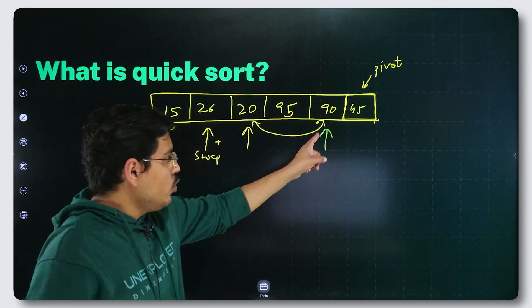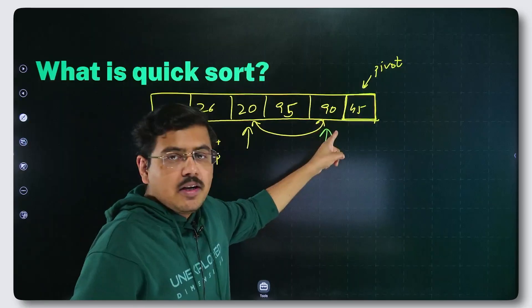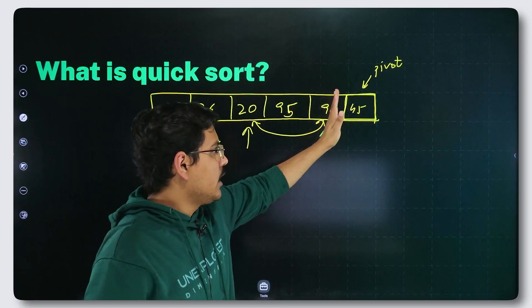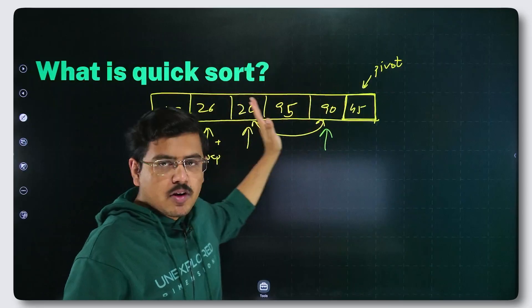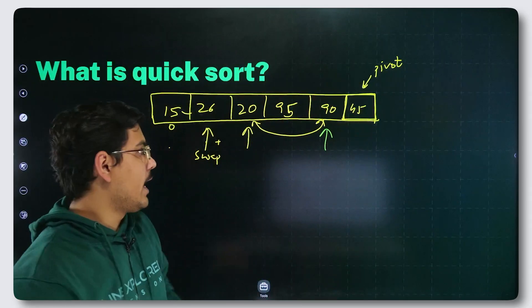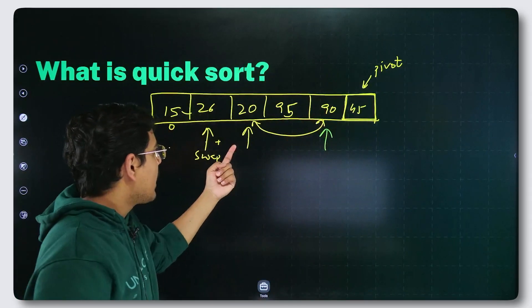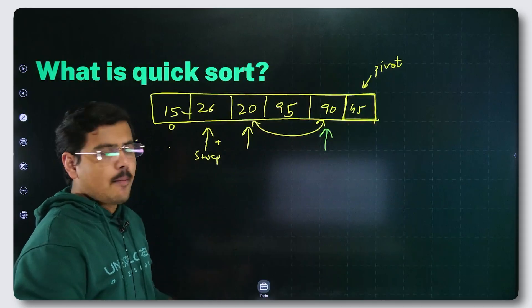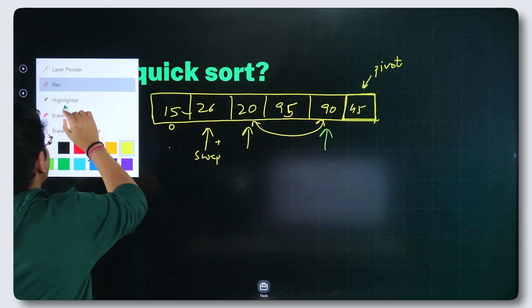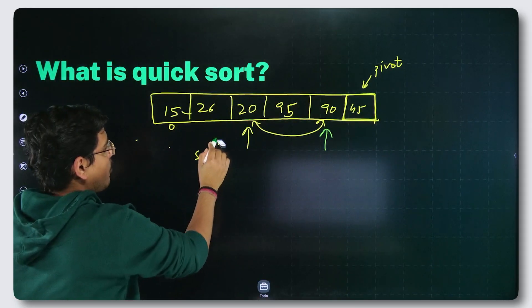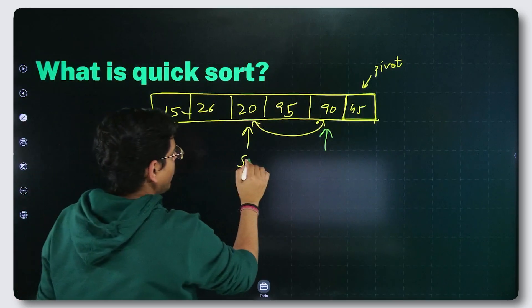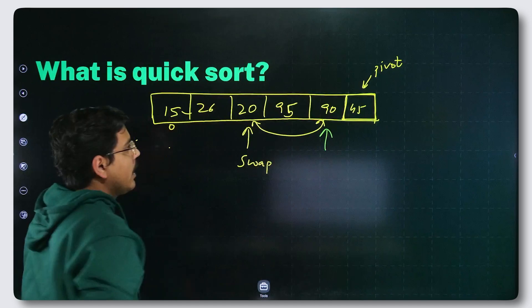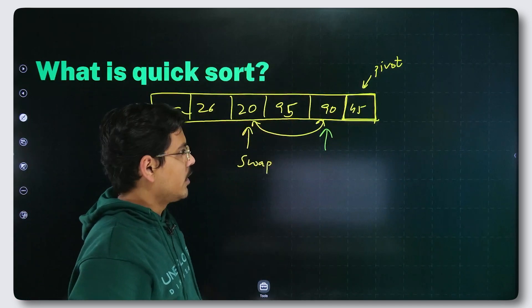Whenever you reach the element just before pivot, basically if I fix the pivot, this is the leftover array. When you have completely traversed the leftover array, what you need to do is, again increment the swap pointer. Because now, if you see, swap pointer is pointing at this place. So what you do is, again you increment swap pointer.